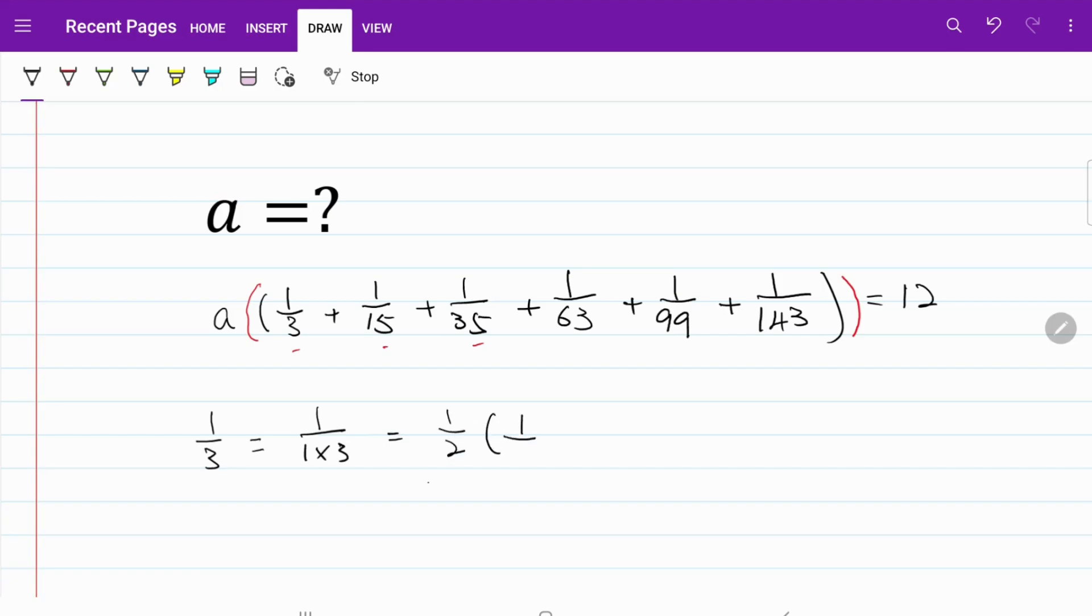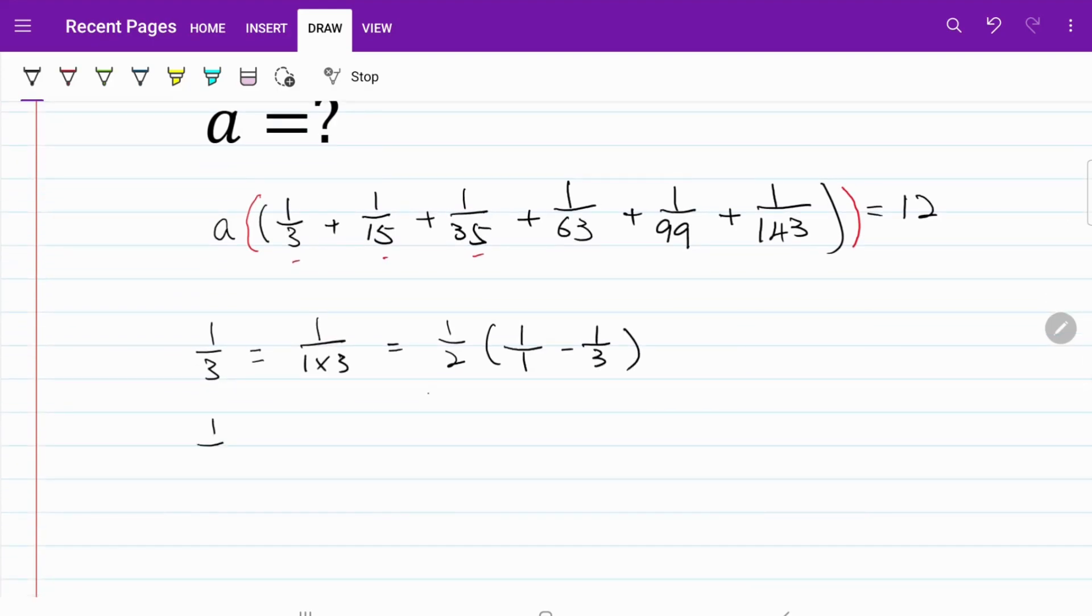Likewise, for 1 over 5, I'm sorry, 1 over 15, I can express that as 1 over 3 times 5 which is equivalent to half multiplied by the difference of 1 over 3 and 1 over 5. Let's move on for the next fraction,